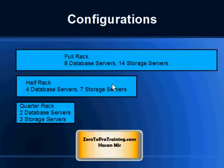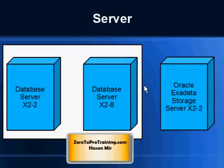A quarter rack has 2 database servers and 3 storage servers. So a cluster consists of X database servers and Y storage servers depending on the configuration you purchase. You can't mix and match — you can't tell Oracle you want a specific number of database servers and storage servers; the numbers are fixed. However, you can choose between the X2-2 and X2-8 database server options.